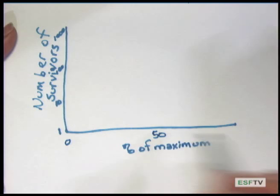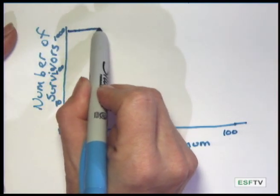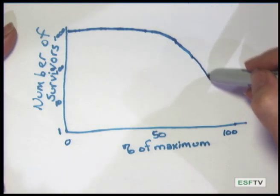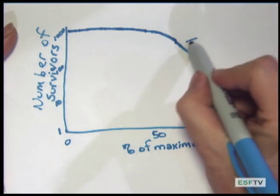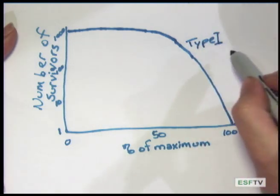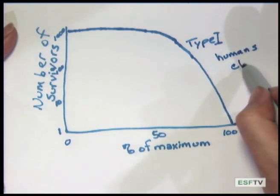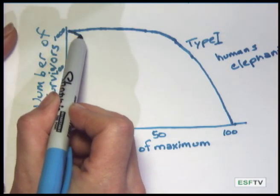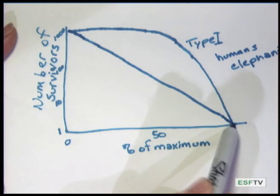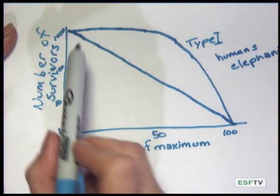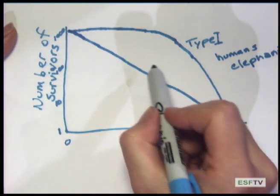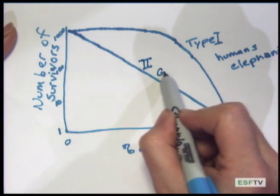Marking 0%, 50%, and 100% on the x-axis: Type 1 individuals generally have high survivorship through their young and middle age spans, and then at some point this drops off dramatically. That is Type 1, represented by humans and elephants. Type 2 organisms have the same susceptibility to mortality whether they're very young, at 50%, or at 100% of their maximum lifespan, represented by ground squirrels.